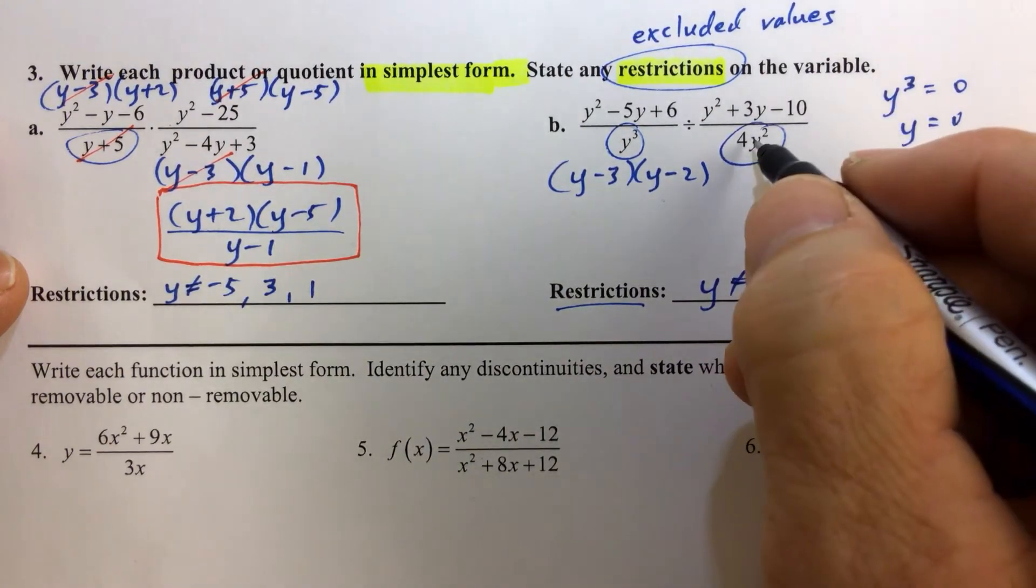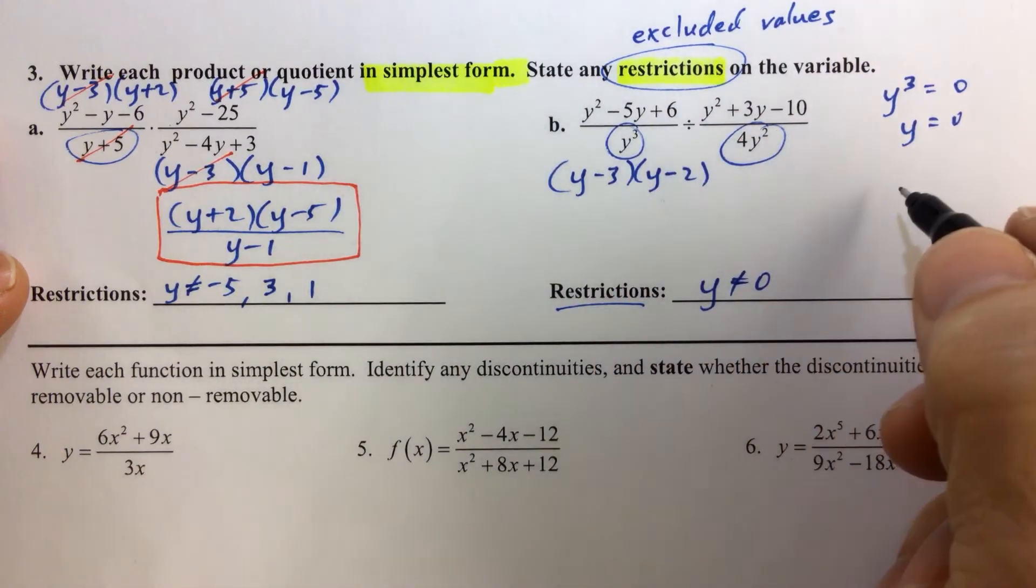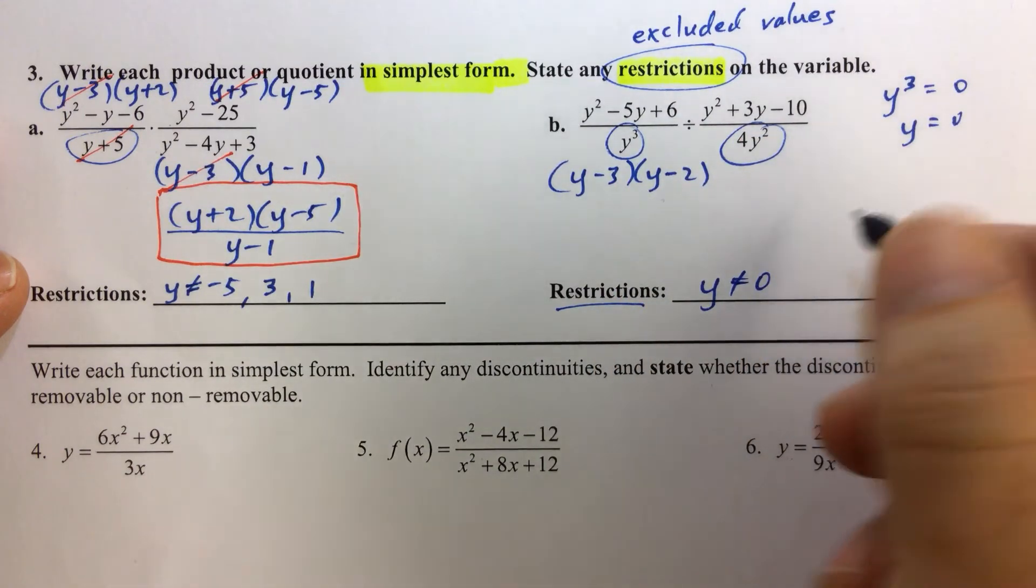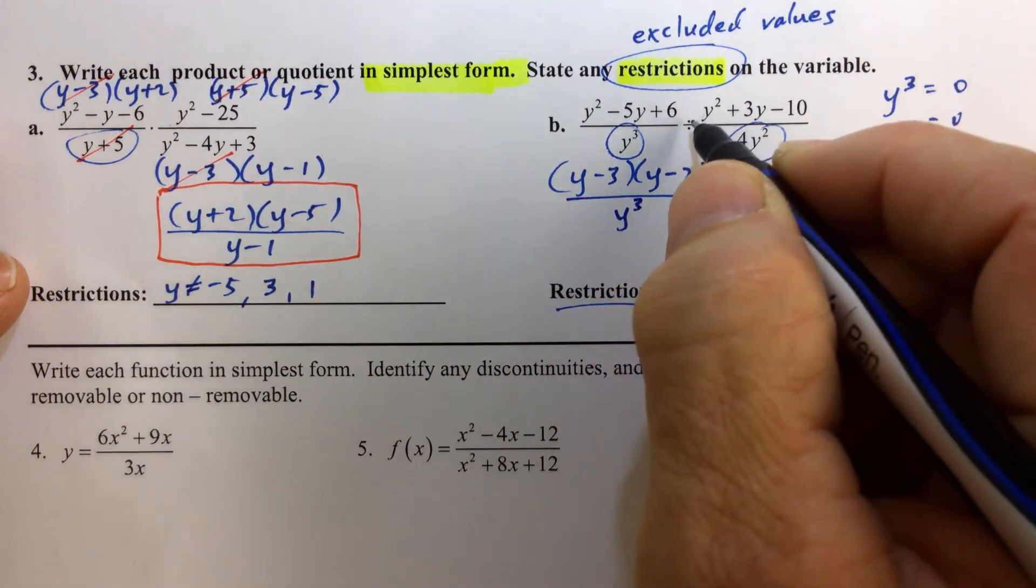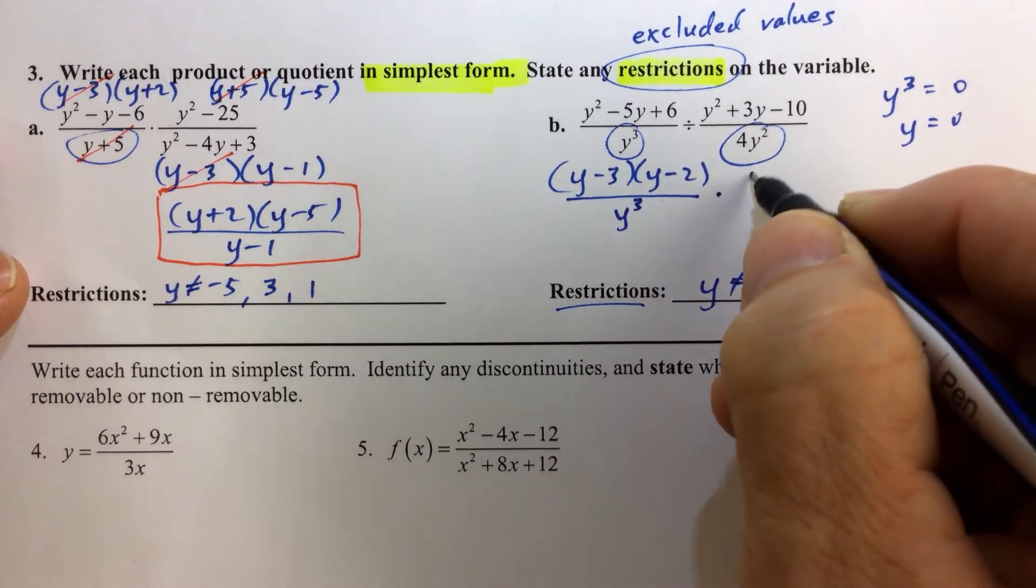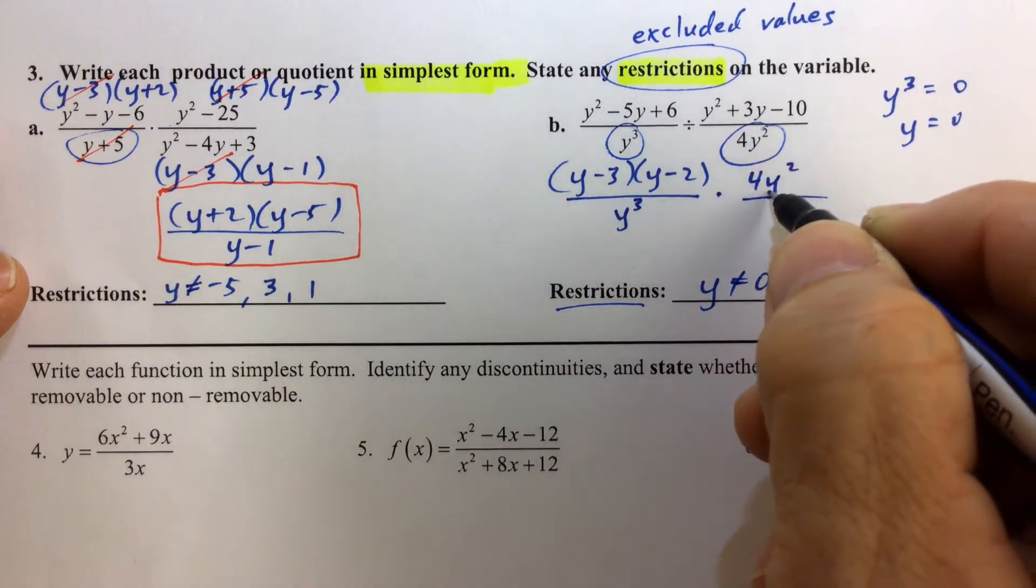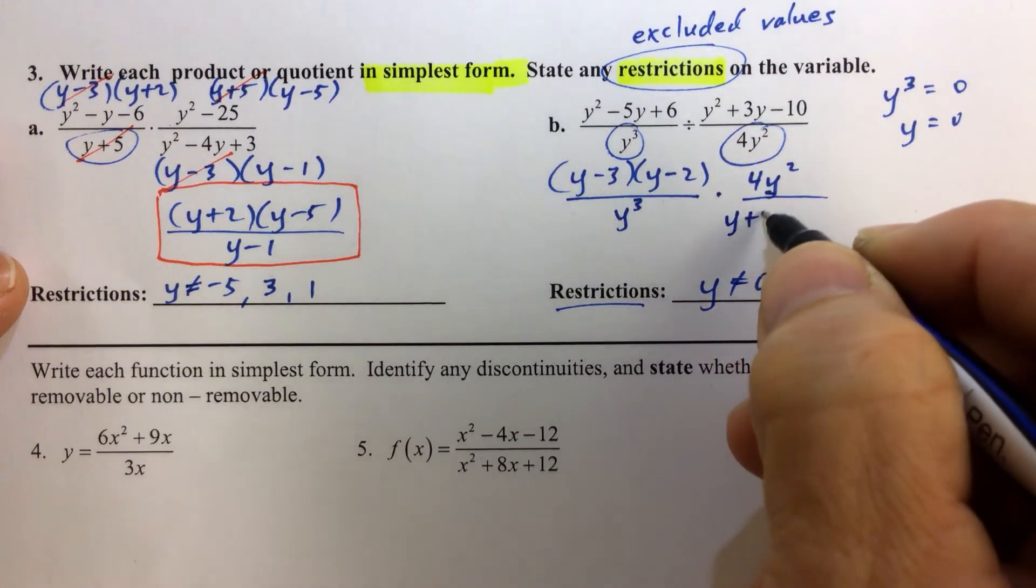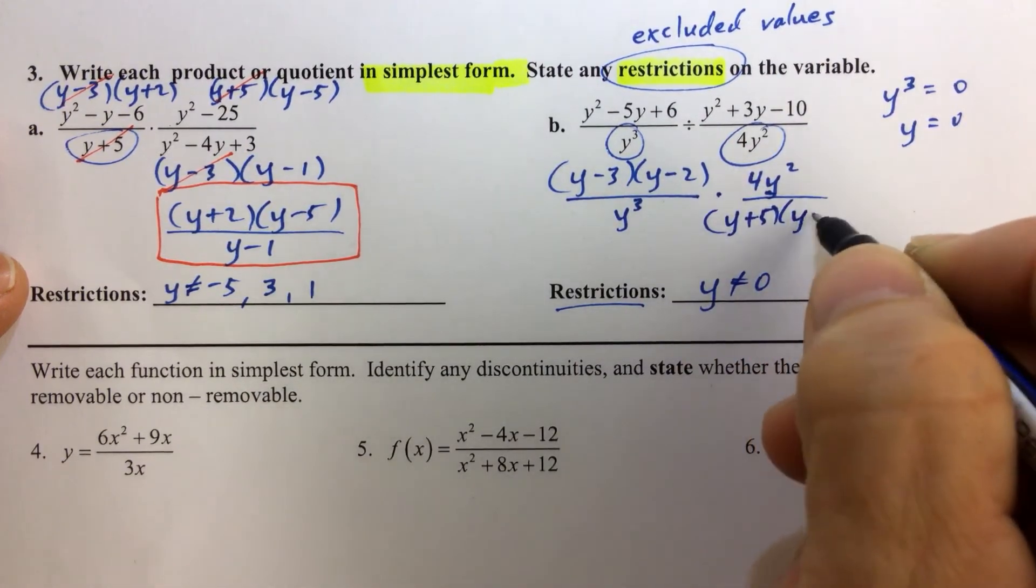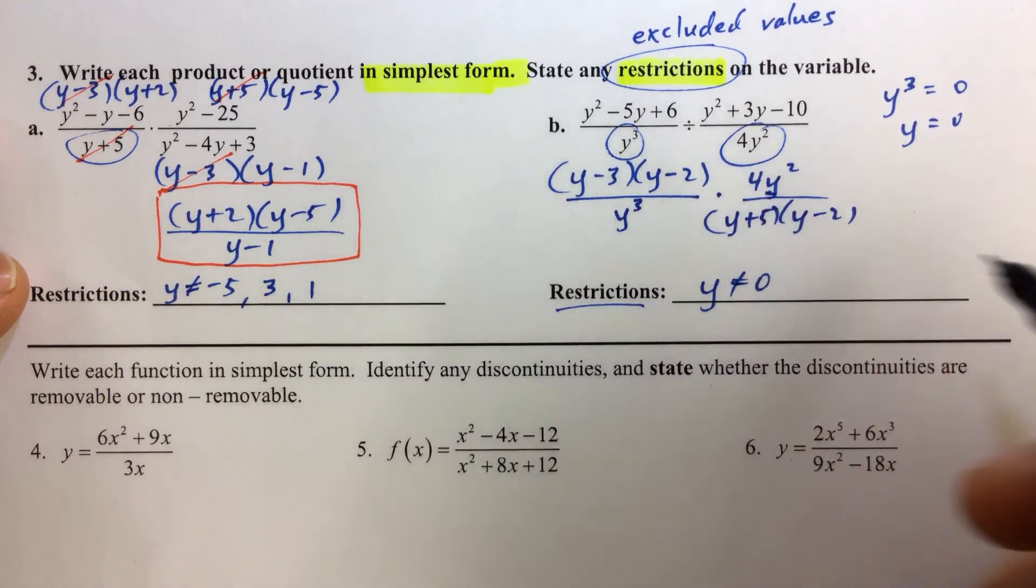When we set that factor equal to 0, we still get 0, because 0 cubed or 0 squared is 0. But don't forget, once we flip that second fraction over - division symbol means we invert and multiply - so we're going to multiply. We put that 4y squared in the numerator, and then we factor this numerator: y plus 5 times y minus 2. We inverted the second fraction and are multiplying now.